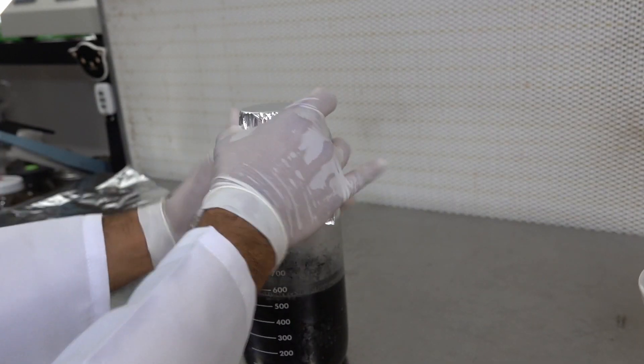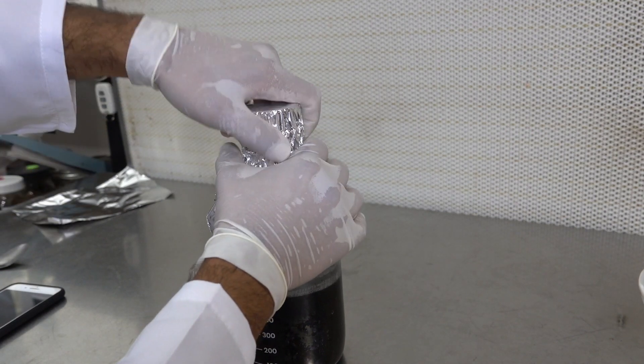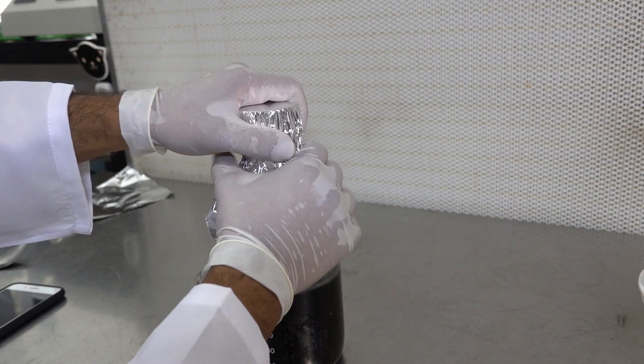Once your bottle cap is screwed on, we will cover this with aluminum foil and we will get ready for the next step which is going to be taking it to the autoclave.